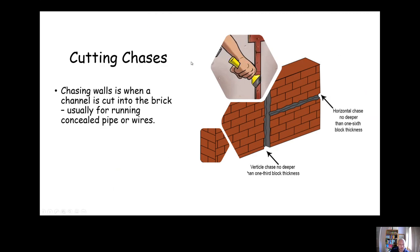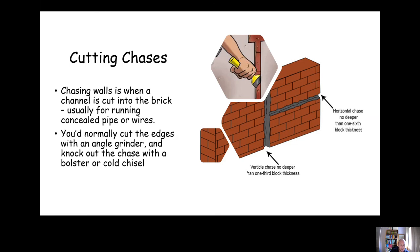Cutting chases very briefly. A chase is a channel which has been cut into brick or block or sometimes even in the concrete floors. There's maximum depths that we can cut these chases to depending on whether it's horizontal or vertical. If you've got a horizontal chase, when it's going along horizontally, you can cut no more than one-sixth of the depth of the block. If you're going vertically you could cut no more than one-third of the depth of the block. This will come up in your test most likely. Normally to create a chase you'd cut along the edges with an angle grinder and then you knock out the middle bit with a bolster or cold chisel.